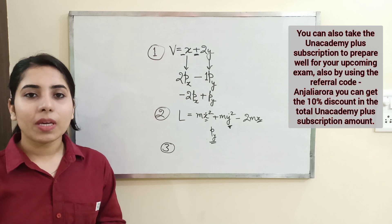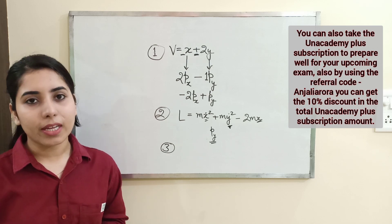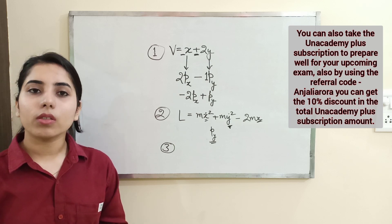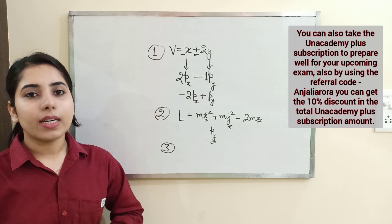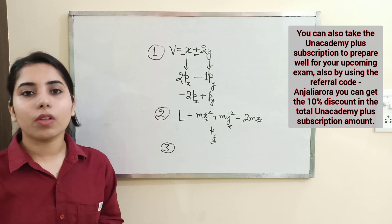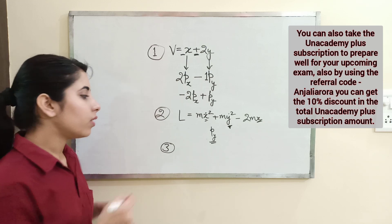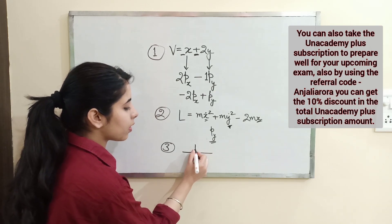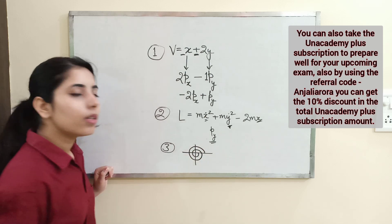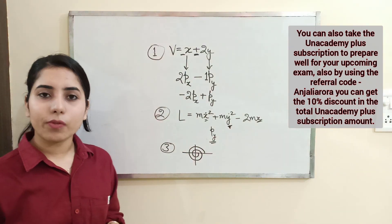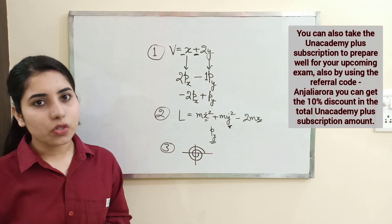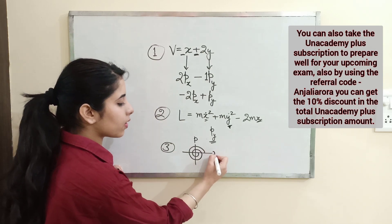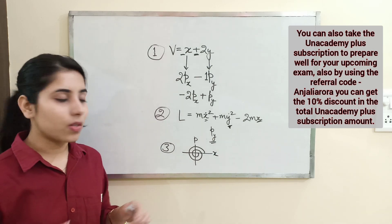Phase space trajectory means the graph between momentum and the position coordinate. When you draw this graph for a non-conservative system, the trajectory will be connected to each other. For example, on a graph with a momentum axis and a position axis, the trajectories will appear connected — the exact shape depends on the system, but this is the key property to remember.